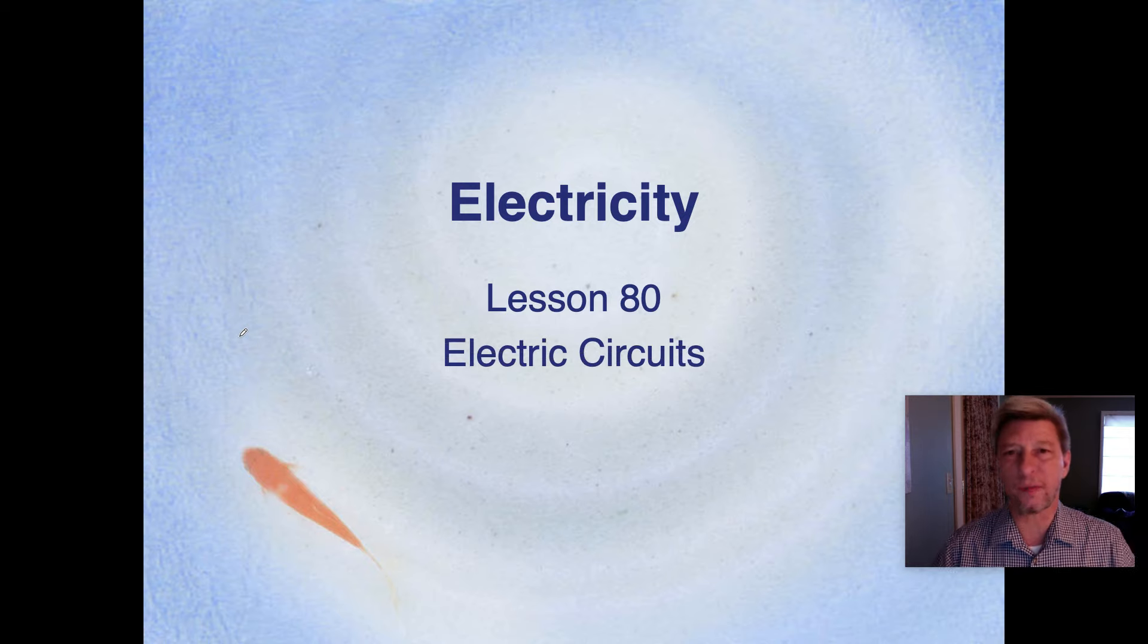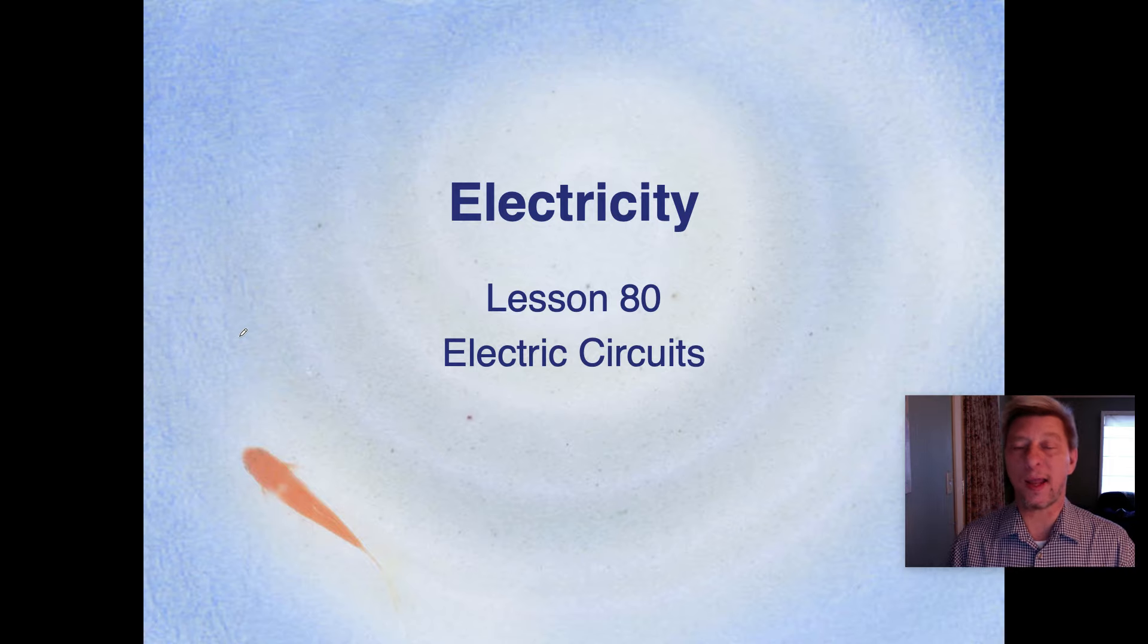Chargers for cell phones, lamps, computers, TVs, anything else that you plug into a socket or anything that runs on a battery. Well, those things are electric circuits. They are forcing electrons to run through a conductor and do work for us as they run through that conductor. That's essentially what an electric current is designed to do.